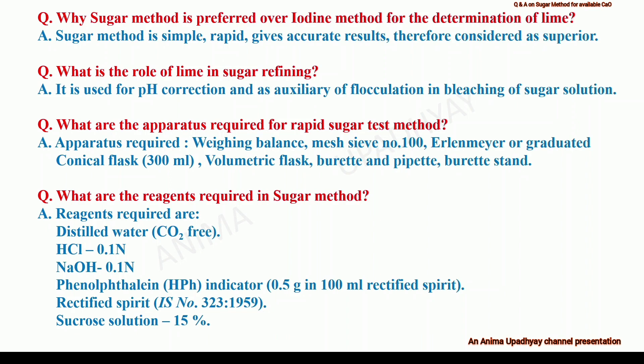What are the reagents required in the sugar method? The reagents required are carbon dioxide-free distilled water, sodium hydroxide and hydrochloric acid solution — both 0.1 normal — phenolphthalein indicator in rectified spirit (Indian Standard number 323-1959), and a 15% solution of sucrose or cane sugar.